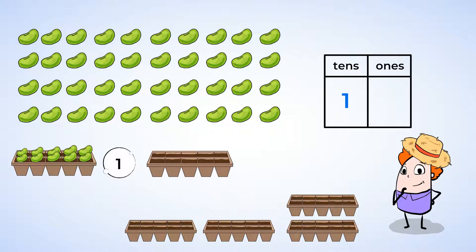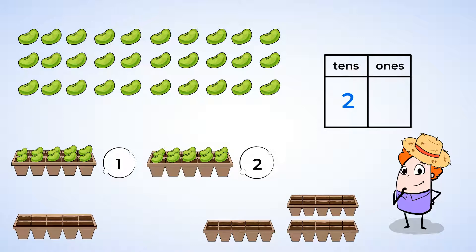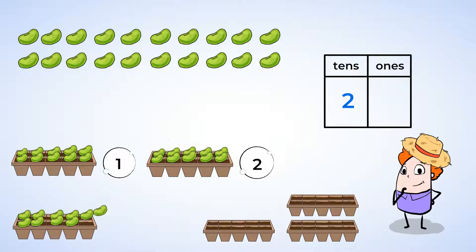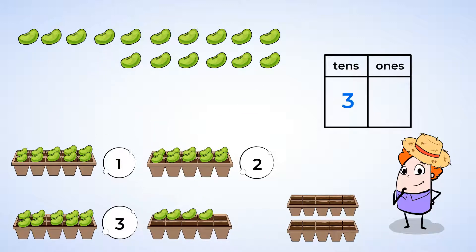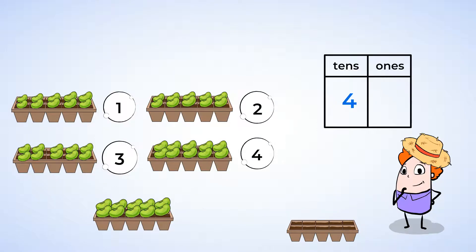1, 2, 3, 4, 5, 6, 7, 8, 9, 10. That's 2 10s. 1, 2, 3, 4, 5, 6, 7, 8, 9, 10. 3 10s. 1, 2, 3, 4, 5, 6, 7, 8, 9, 10. 4 10s. 1, 2, 3, 4, 5, 6, 7, 8, 9, 10. 5 10s.